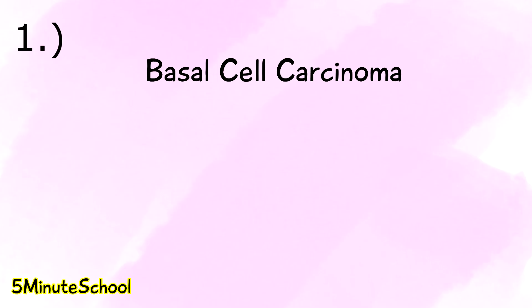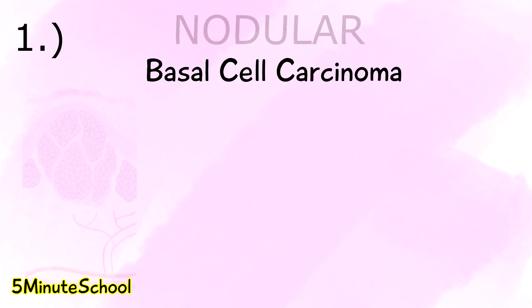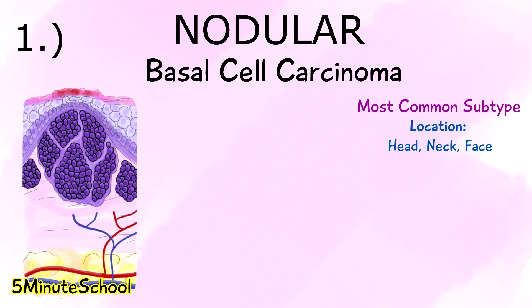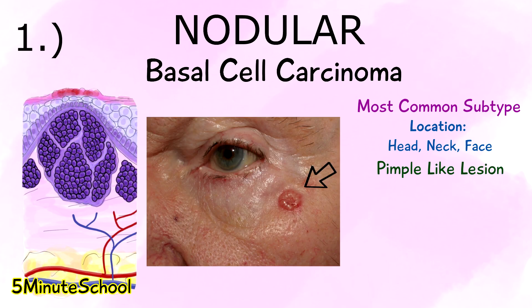There are three main types of basal cell carcinomas. The first is known as nodular basal cell carcinoma, which is the most common subtype. Common locations for this type can be in the head and neck area, commonly seen on the face. It presents as a pimple-like lesion which doesn't heal, and it may also be prone to bleeding and can be sore or itchy.